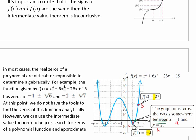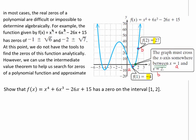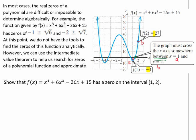If we were being asked to do this as a problem, let's see how we would do that. If we were asked to show that the function f(x) = x⁴ + 6x³ - 26x + 15 has a zero on the interval [1, 2], how would we do that? This is our a and this is our b. You can see that a is in fact smaller than b.